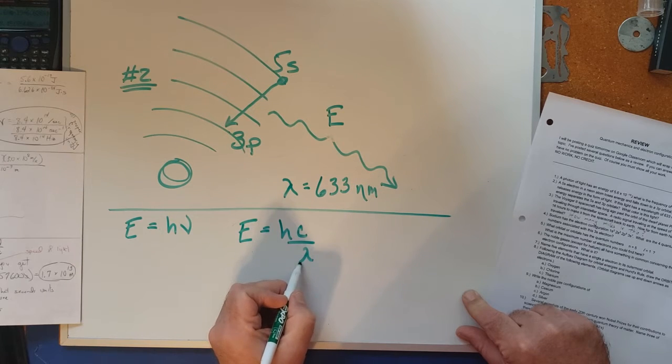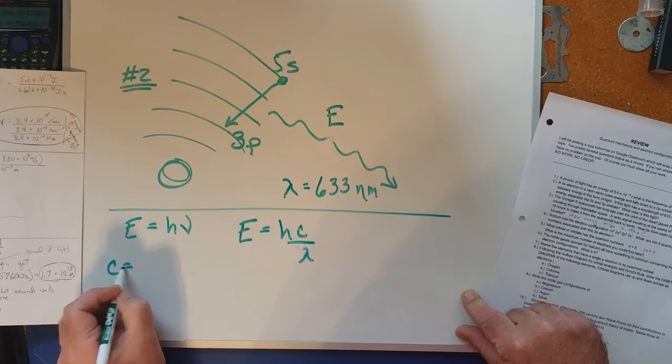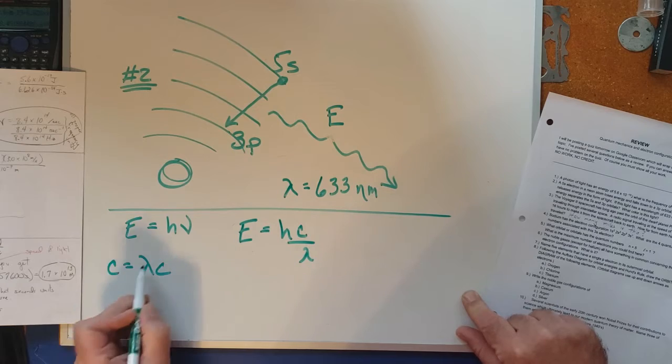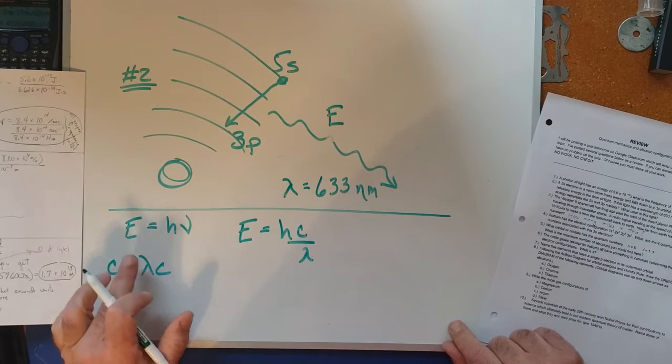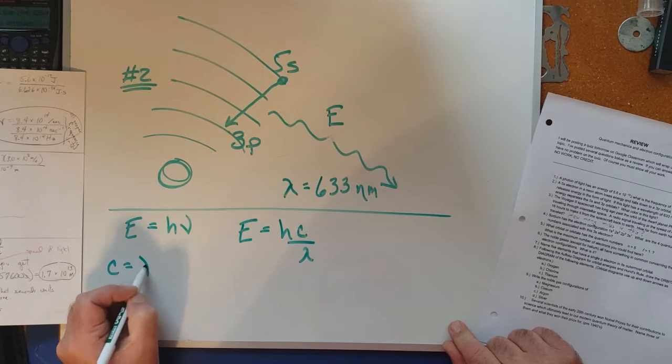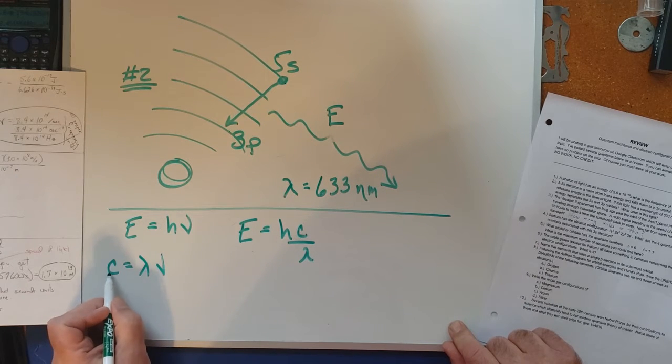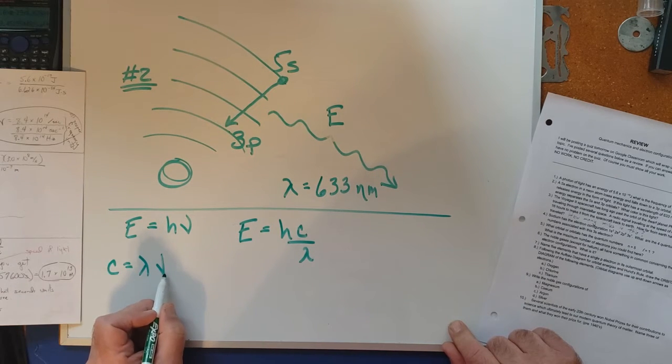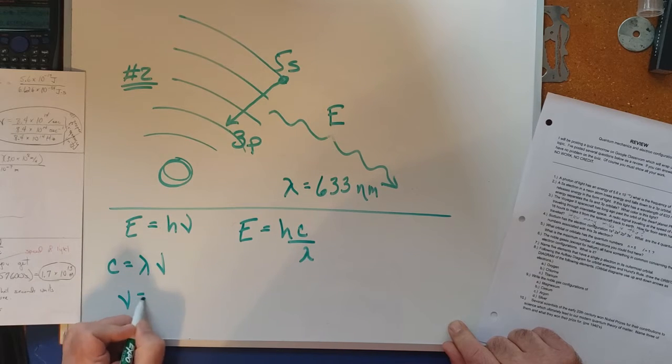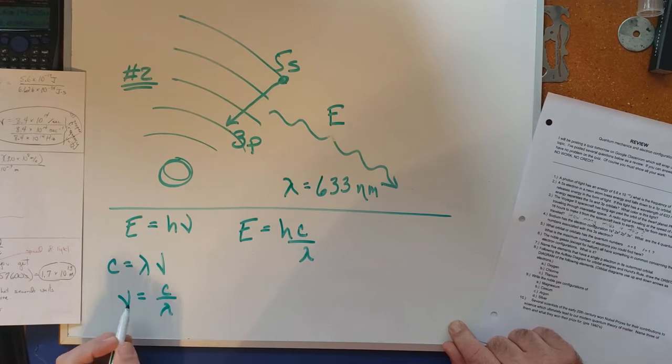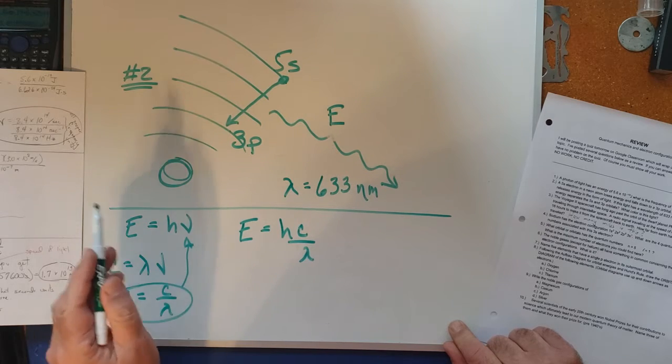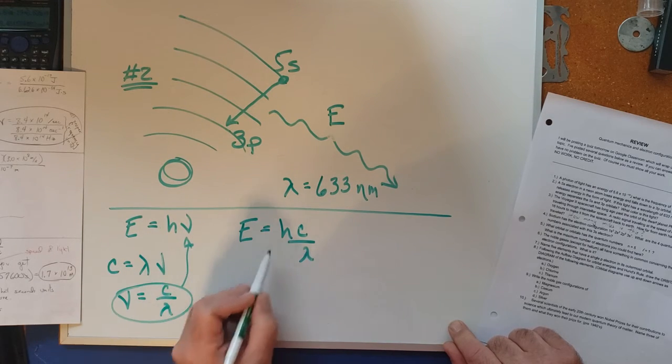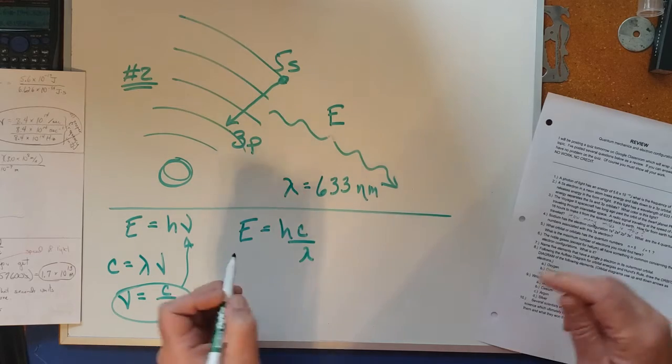And that has to do with this equation right here, speed of light equals frequency, c equals lambda nu. The speed of light is equal to the wavelength times the frequency. If you solve for frequency you get c over lambda, so all we do is go up here and say, let's get rid of the frequency and put in c over lambda, so we get E equals hc over lambda.